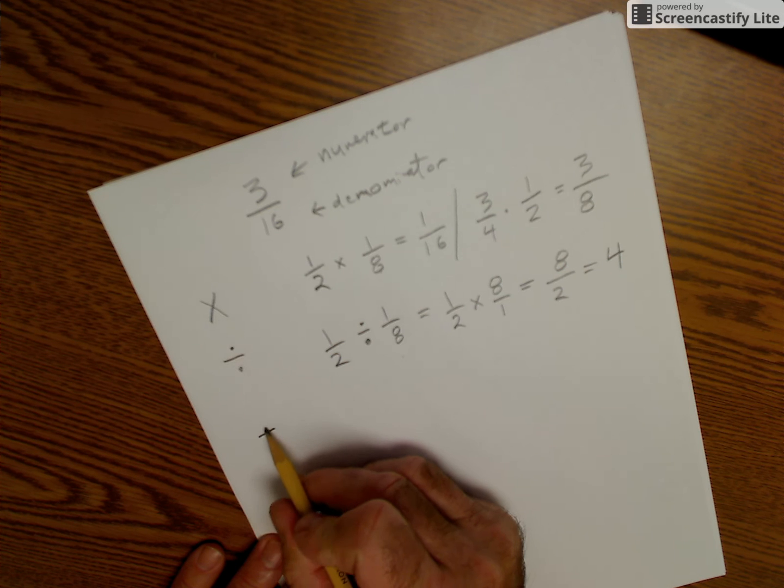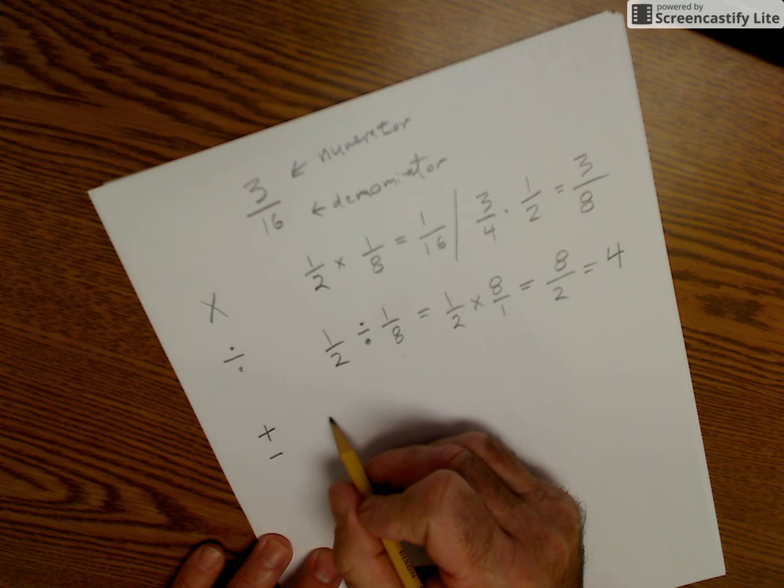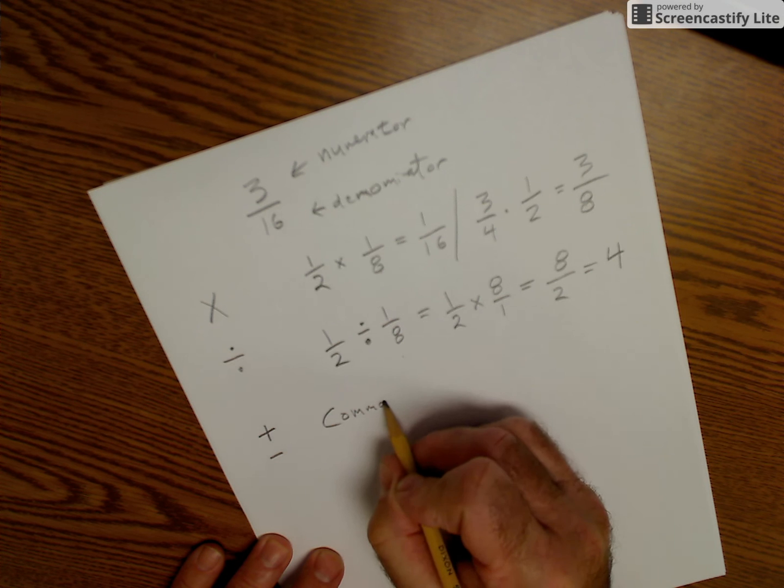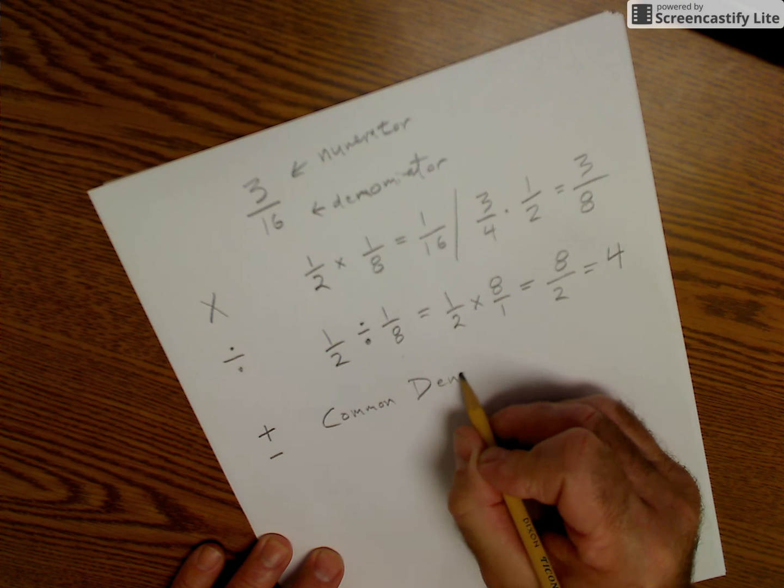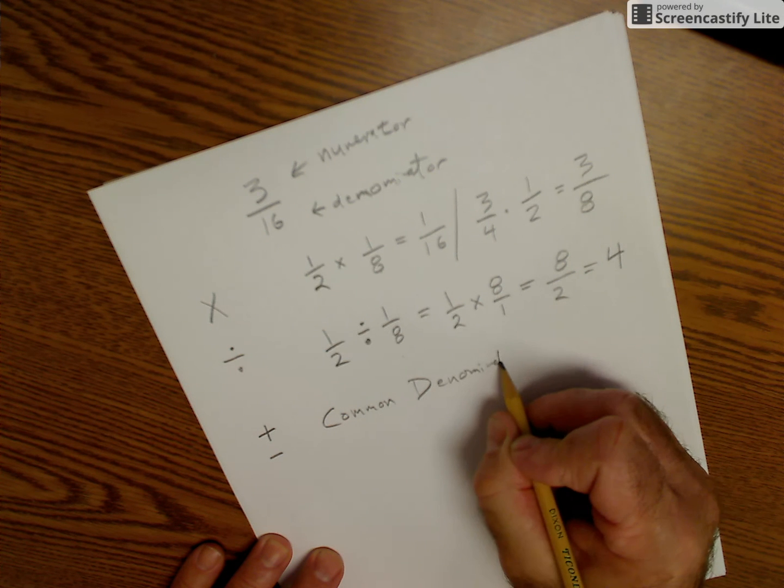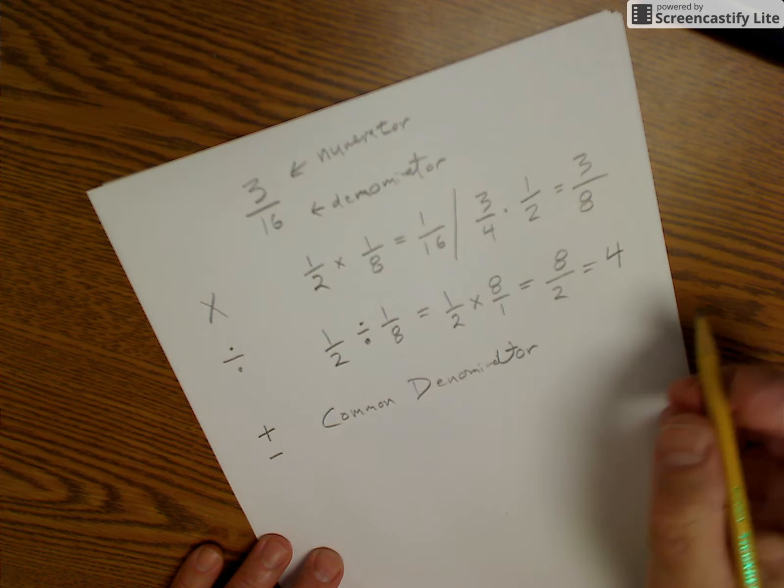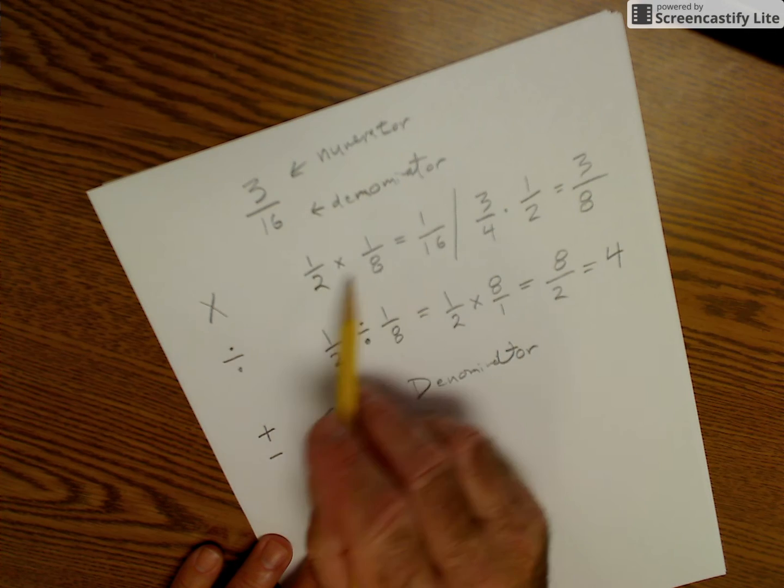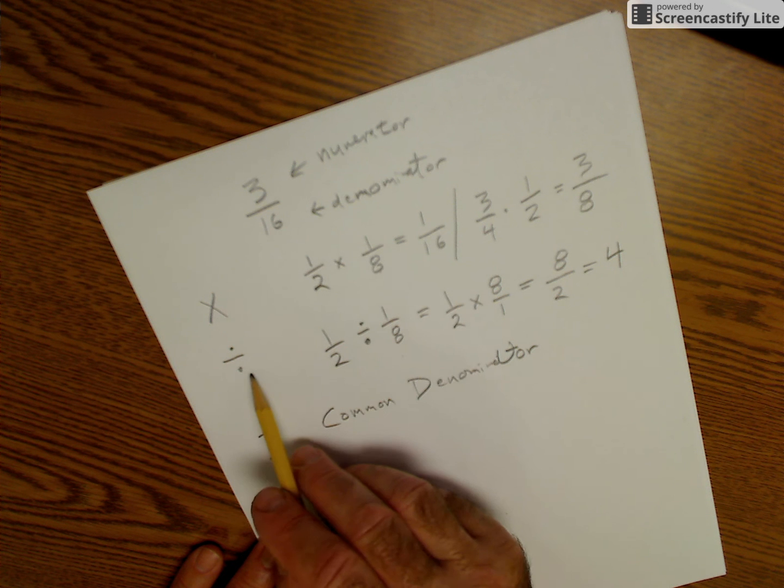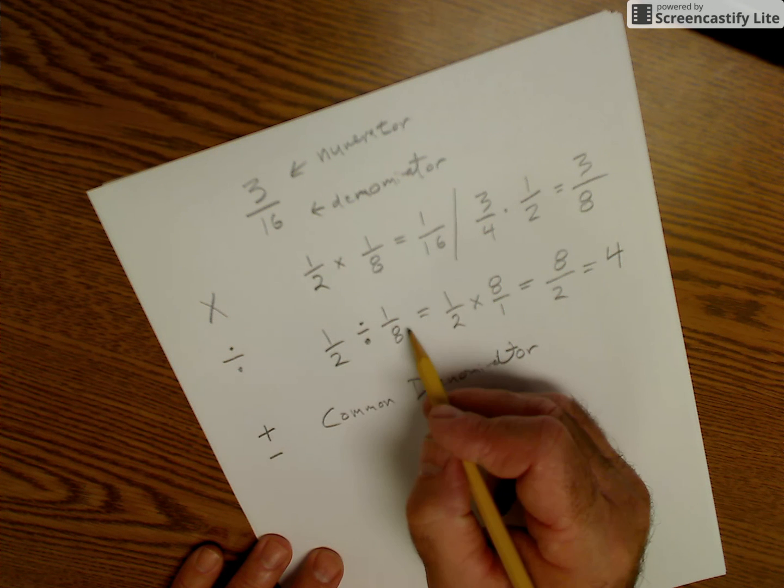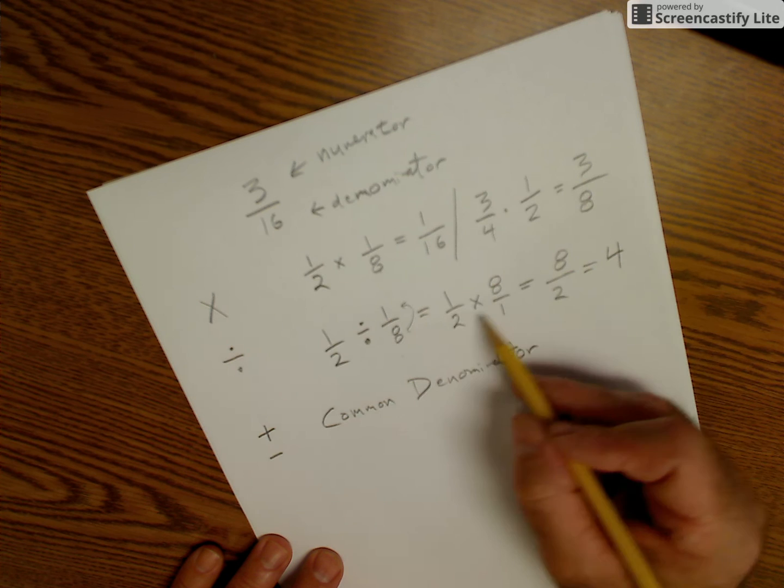So fractions are really key to understand. Again, adding and subtracting, I have to have a common denominator. So the bottom number has to be the same. Multiplying, I just go right across the top, right across the bottom. Division, I flip over the second term, and then I multiply.